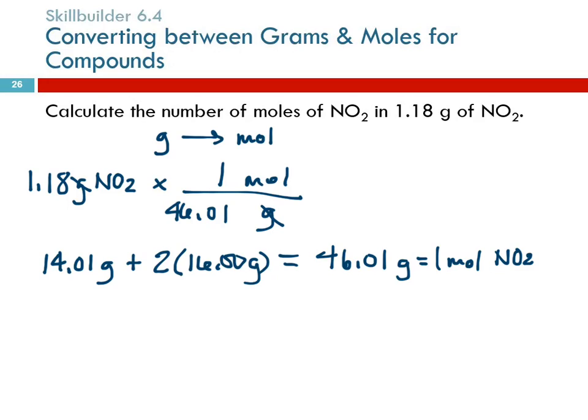So now one mole, 46.01 grams. So it's going to be 1.18 times 1 divided by 46.01. This one should also have three significant figures because of my starting number. So my calculator says 0.0256. The next digit is a 4, so I round down. And that is moles, NO2. The grams went away. I've got moles left.